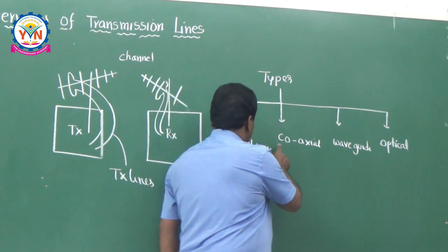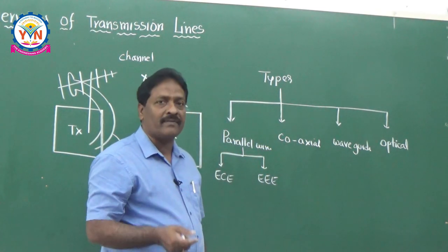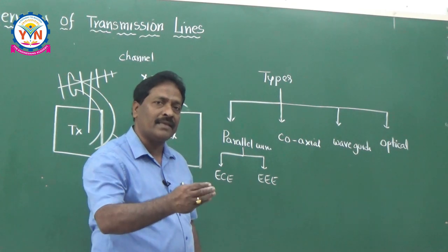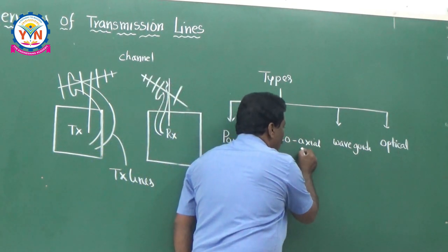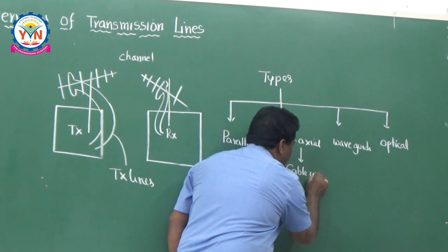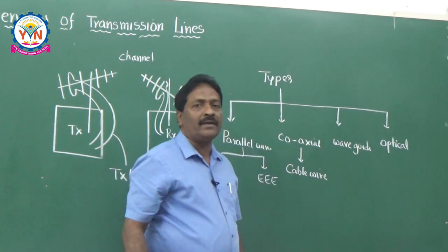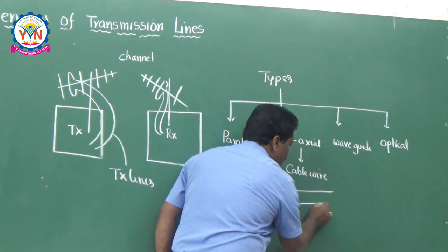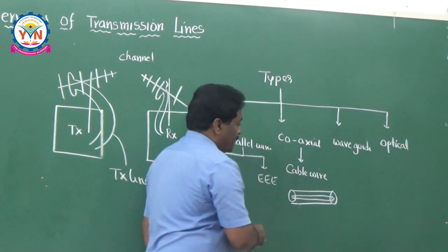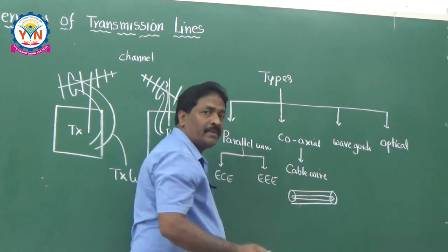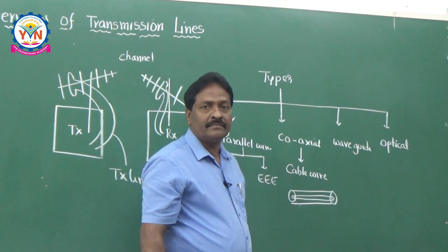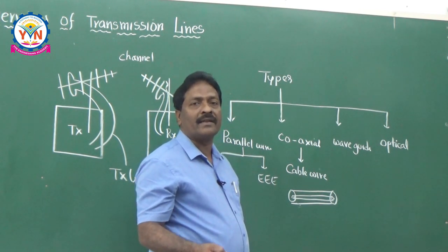Parallel wire type transmission lines fail at a particular frequency. Once the frequency increases, people go for coaxial transmission lines. A practical example is cable wire — this cable has an outer wire and an inner wire. The inner wire carries the signal from one place to the other, like a TV cable signal. The outer wire is a shielding, because every system requires a plus and minus connection.